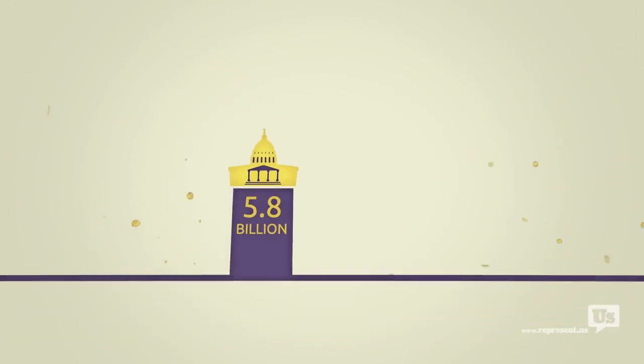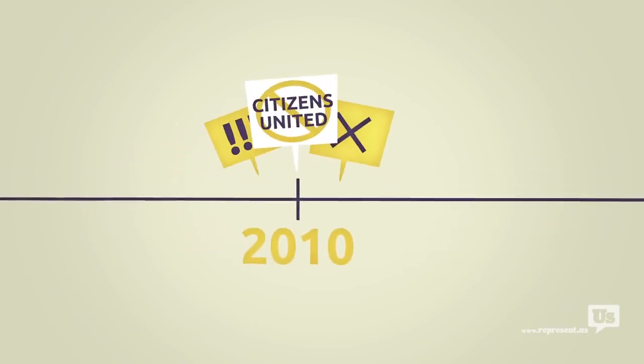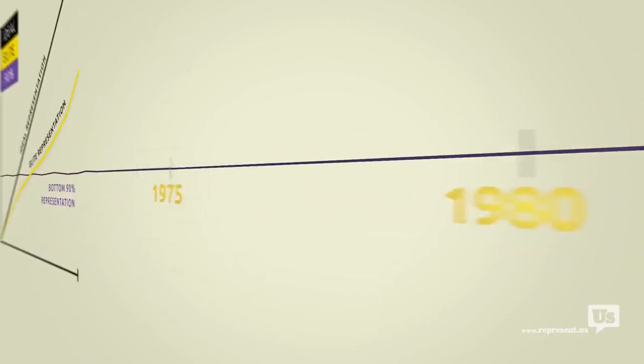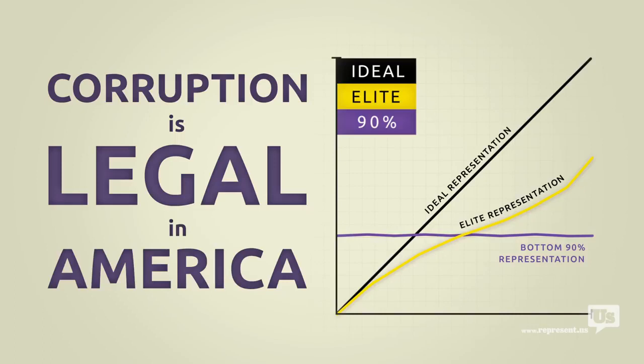You know there's this idea out there that this only became a problem after the Supreme Court Citizens United decision in 2010. But the data goes back almost 40 years and the results are clear. Corruption is legal in America. And as long as it is, anyone who can spend money to buy political influence will.